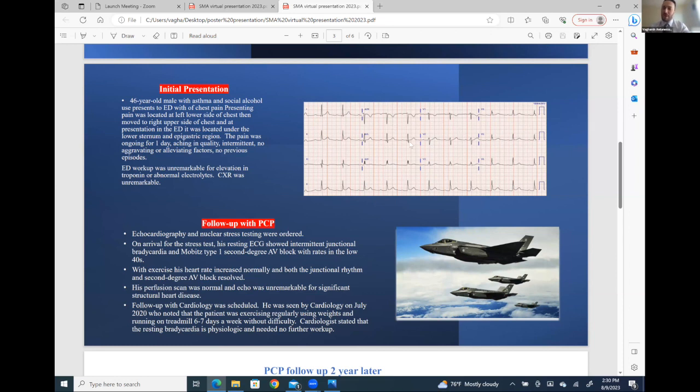Are you guys able to see my mouse as I point things out? Okay, so technically it seems like there's ST elevations in lead two for example, but if you take the ST segment and compare it to TP segment, it seems like a downward slanting, so it's not a real ST segment elevation.